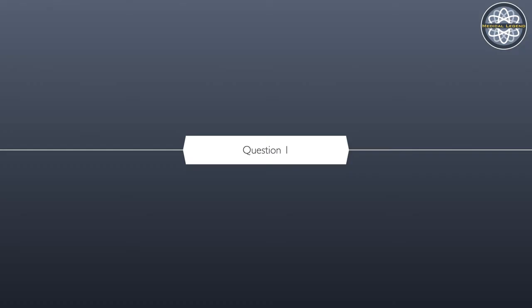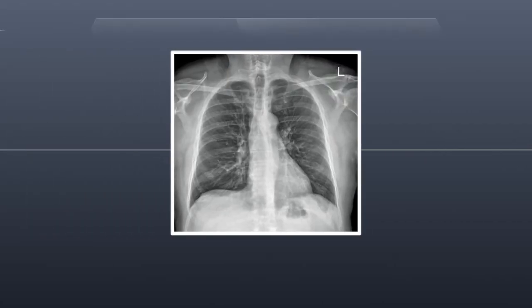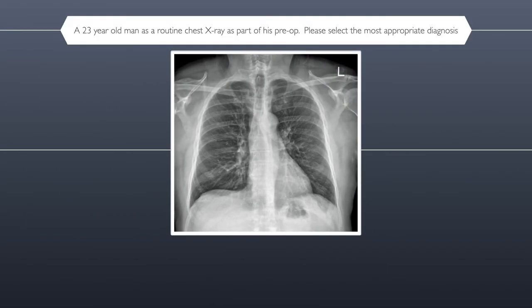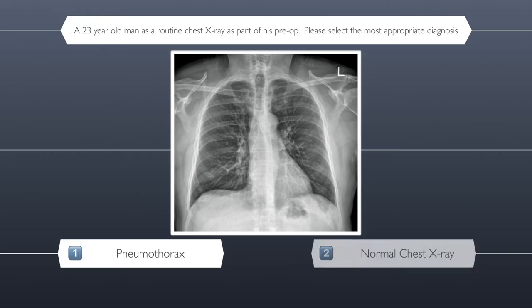Question one. To help ease you into this, we're going to make the first one fairly straightforward. A 23-year-old man has a routine chest x-ray as part of his pre-operative assessment. Please review this x-ray and select the most appropriate diagnosis. Your four possible answers are: pneumothorax, or a normal chest x-ray.